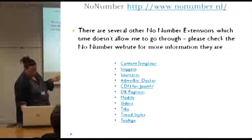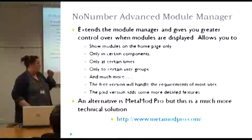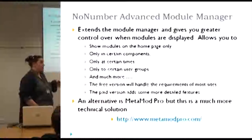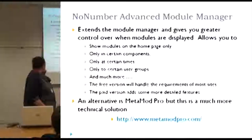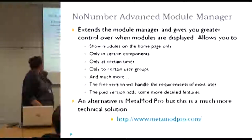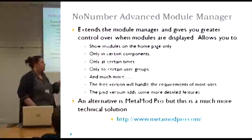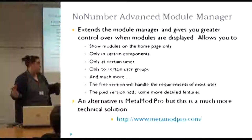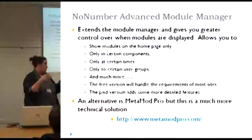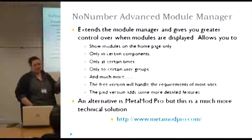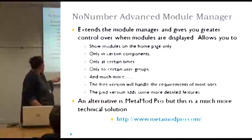The one I'm going to talk about is No Number Advanced Module Manager. This is one of the most useful tools I've ever found. It allows you to control when modules are displayed in a much more detailed way than the normal one — just menu items on and off. You can show modules on the homepage only, which uses the true homepage rather than a menu item. You can turn it on and off in certain components. This is all in the free version.